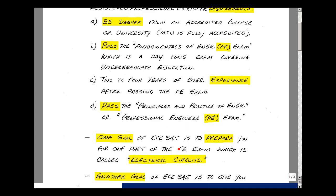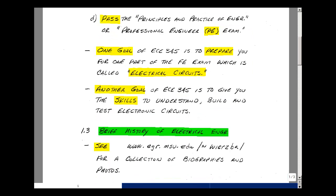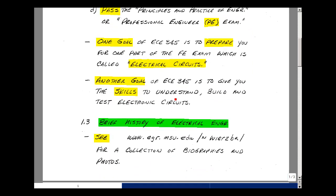One goal of ECE 345 is to prepare you for taking one part of the FE exam, which is called Electrical Circuits. Another goal of the course is to give you the skills to understand, build, and test electronic circuits.